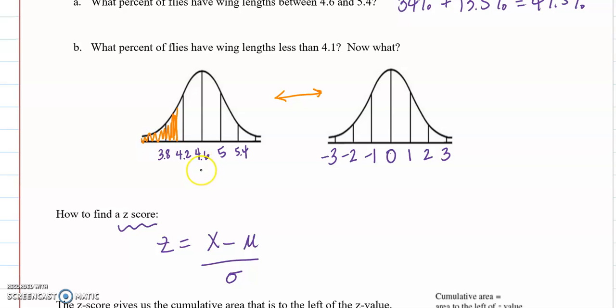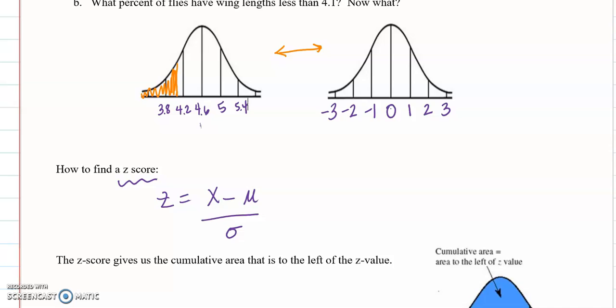So if we have 4.6 as our mean, how do we go to zero? Well, we subtract the mean and then we divide by the standard deviation. Similarly for 5, 5 minus 4.6 is 0.4 divided by 0.4 is 1. So this will work with every single problem we do.